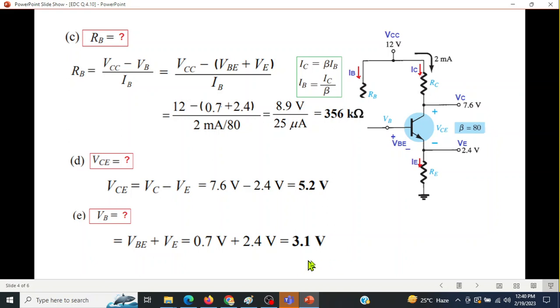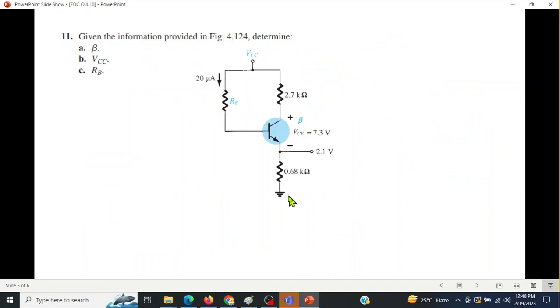This is question number 10. Now we come to question number 11. Similar circuit, we have to find the transistor beta, then VCC, and base resistance RB.